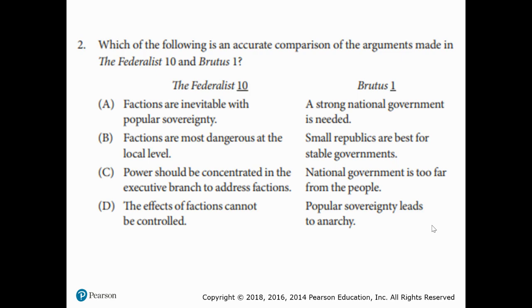The answer is B. It's definitely not A — Brutus did not want a strong national government; that document is Anti-Federalist. C looks good but Madison never said power should be concentrated in the executive branch — he said factions would even each other out. It's not D because the effects of factions can be controlled by letting factions compete with each other. That leaves answer B.